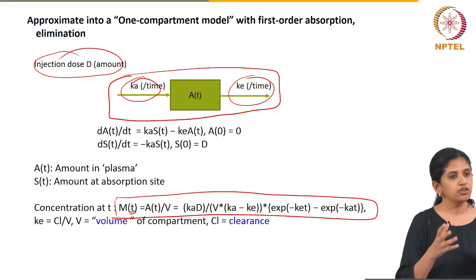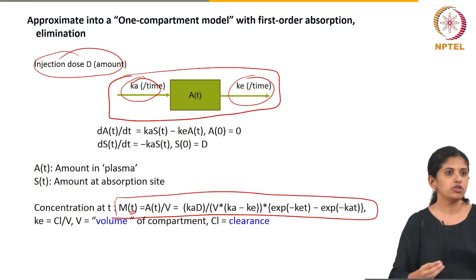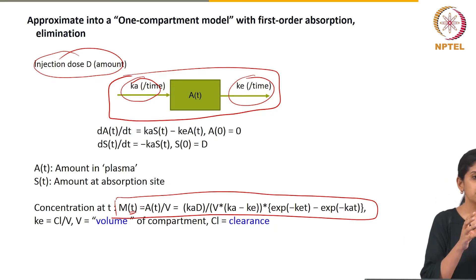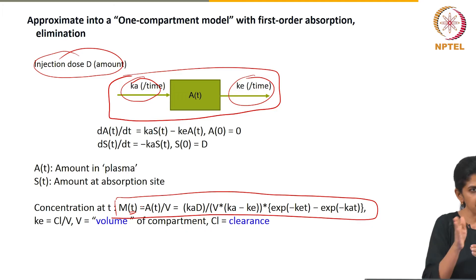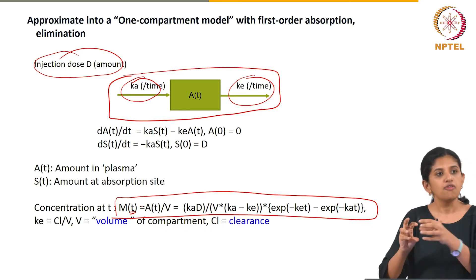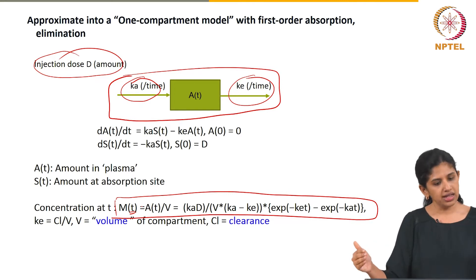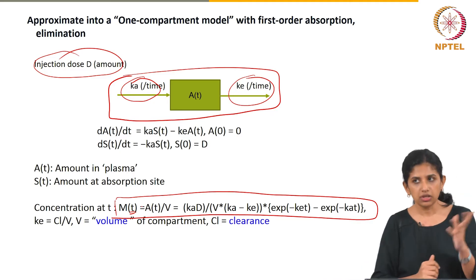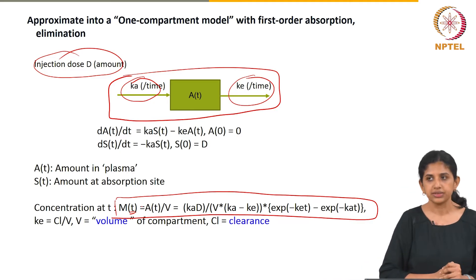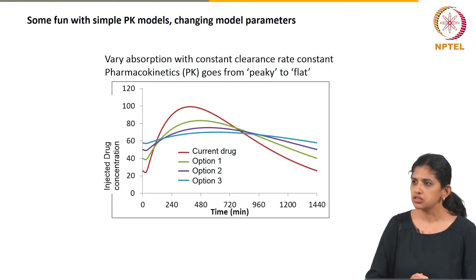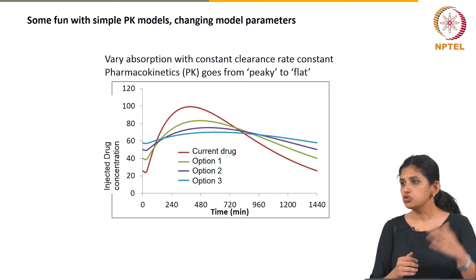You can have more than one compartment if you want more time for distribution to happen. Metabolism is another consideration — often you give one drug, it gets metabolized and chopped into daughter chemicals which are then used. Distribution and metabolism can get complicated to model. In this case I kept it simple — something comes in, something goes out. But you can have more complicated models with one-compartment or two-compartment structures.